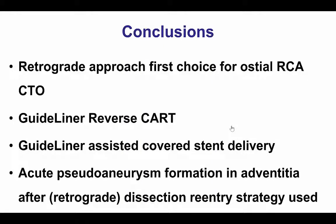This case provides several lessons. The first one is that for flush ostial occlusions, the retrograde approach can be very valuable for achieving success. The guideliner reverse CART is very useful for reverse wiring through areas of tortuosity. Delivering a covered stent in case of perforation can be very important, but can be difficult because these are bulky devices, and using a guideliner — specifically an 8 French guideliner — can be useful for delivering those devices. In the end, it appears that it was likely a pseudoaneurysm forming after the balloon ruptured in the mid-right coronary artery, also emphasizing the importance of doing immediate angiography if there is balloon rupture in the coronary artery.